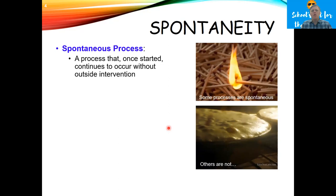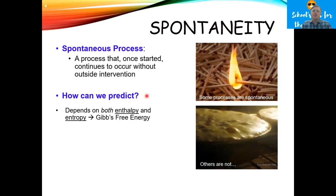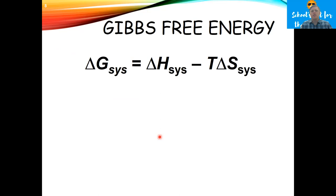So how can we predict whether a reaction is spontaneous? It turns out that the enthalpy and the entropy will give us the answer. We're going to use both to calculate a new value called our Gibbs free energy, which will tell us whether a process is spontaneous or not. The equation is: the change in Gibbs free energy of a process is equal to the change in enthalpy of that reaction minus the temperature times the change in entropy. There are just three things here: the heat (exothermic or endothermic), the temperature, and how much it changes the disorder of the universe.